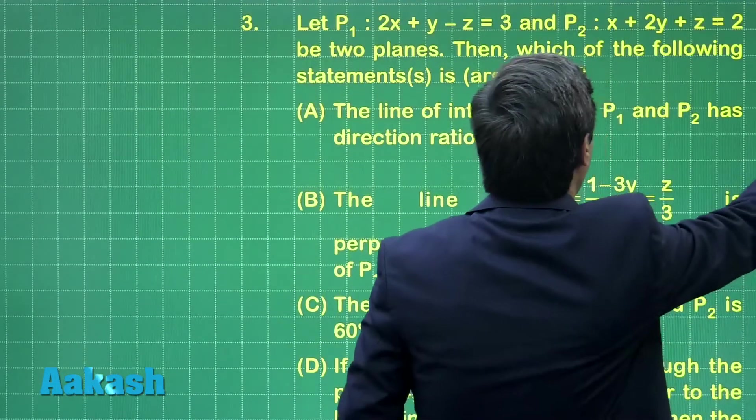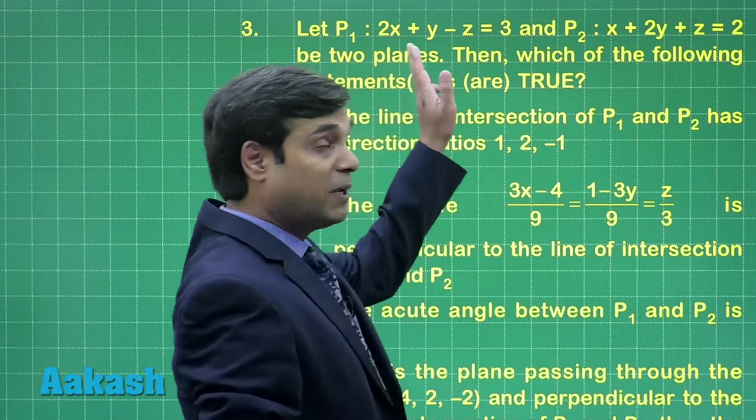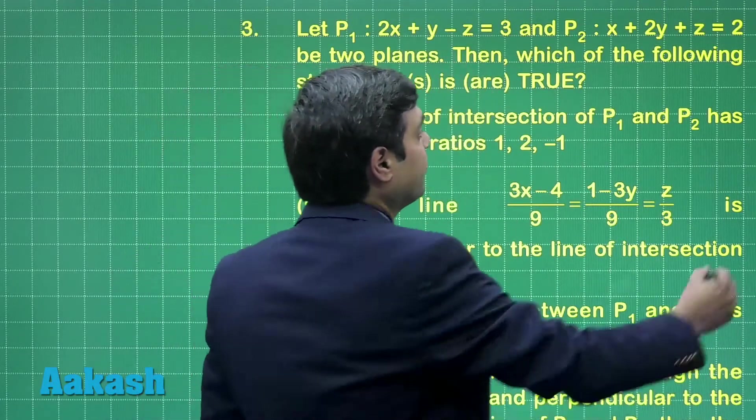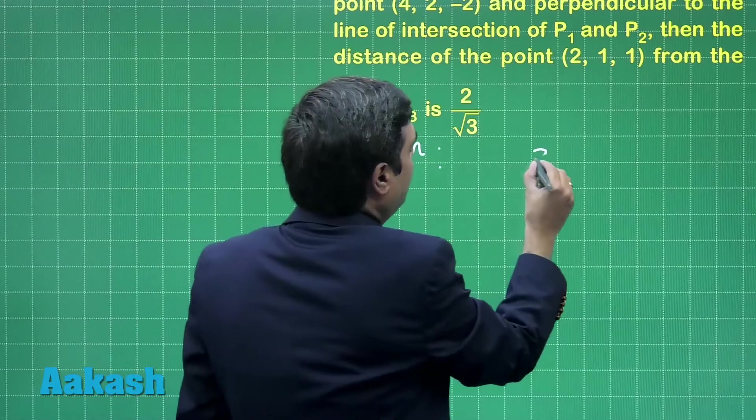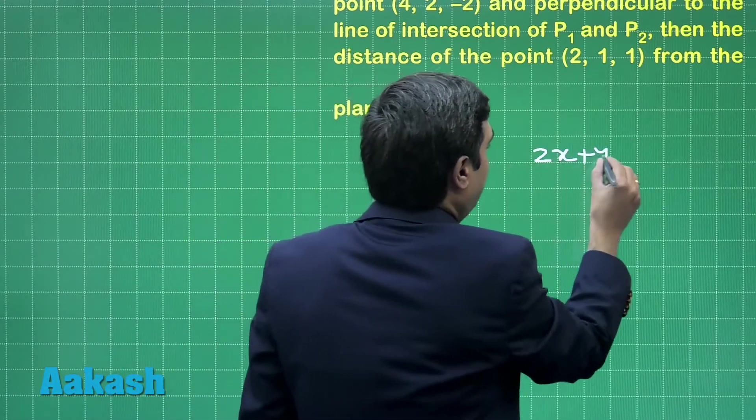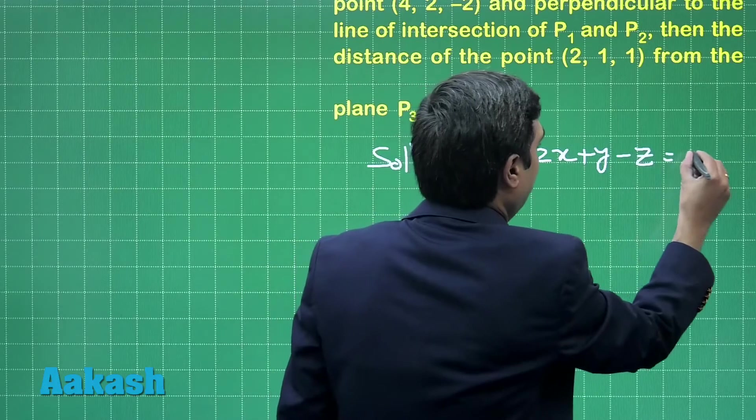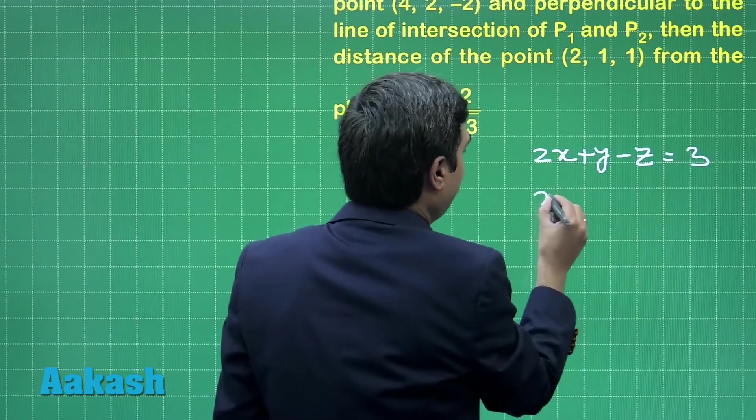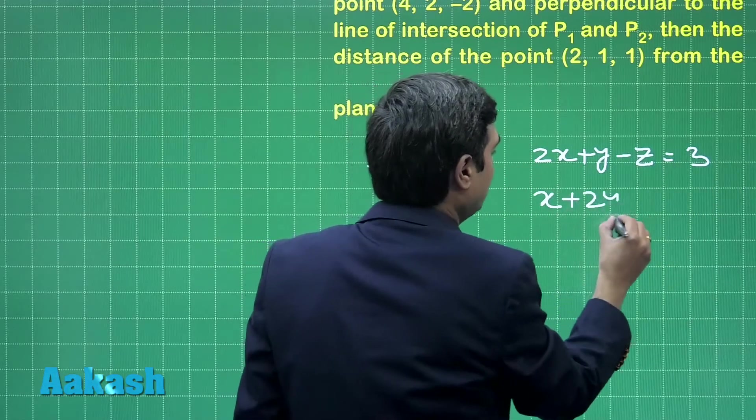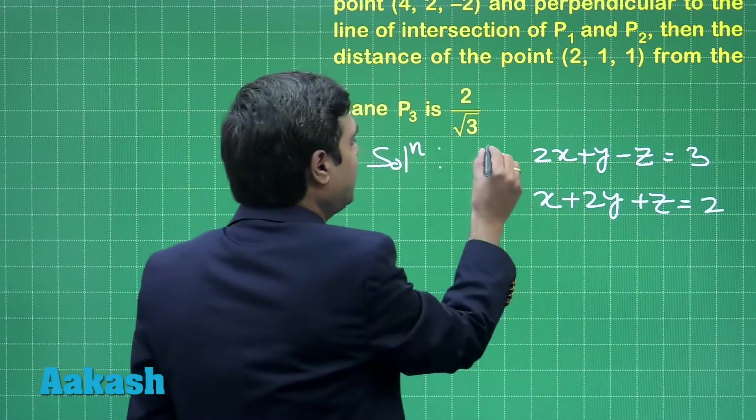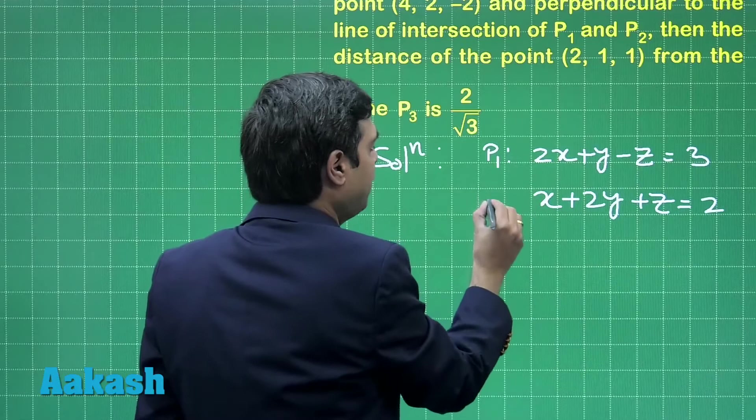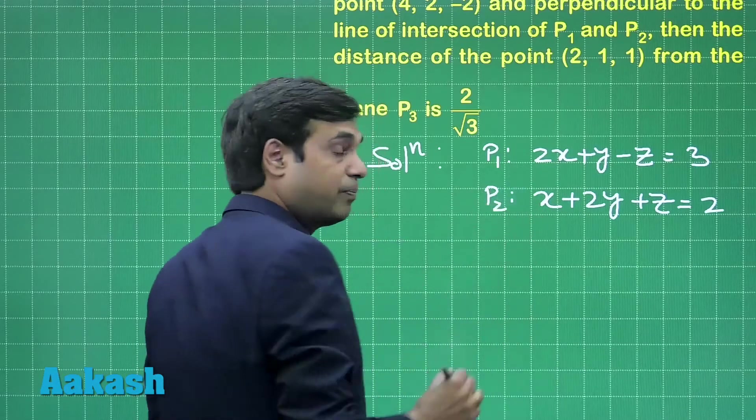The two planes given to us are 2x plus y minus z equals 3, let us write down 2x plus y minus z is equal to 3, and the other plane is x plus 2y plus z is equal to 2. These are the two planes denoted as P1 and P2.